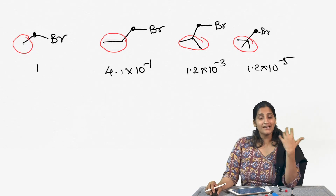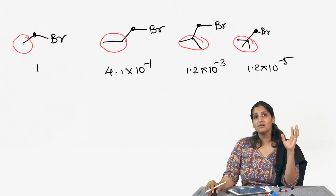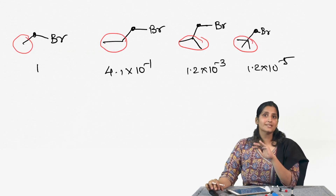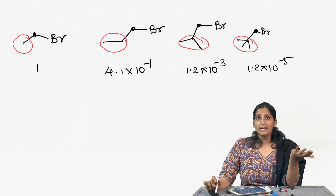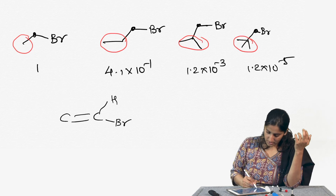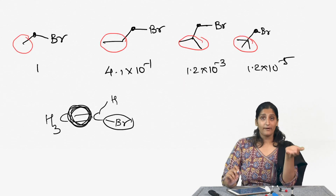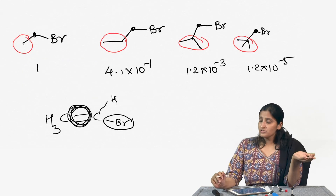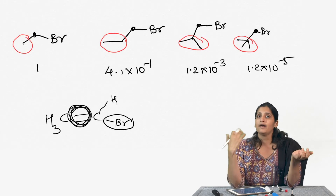For SN2 reactions, the less bulky the carbon, the better. For SN1 reactions, the more stable the carbocation, the better. One important note: SN2 reactions can never occur on SP2 or SP hybridized carbons. For example, at a vinyl-type carbon the backside of the carbon-bromine bond is the pi bond, and a nucleophile cannot attack from where the pi bond is. So SN2 reactions are almost never seen on SP2 or SP hybridized carbons.